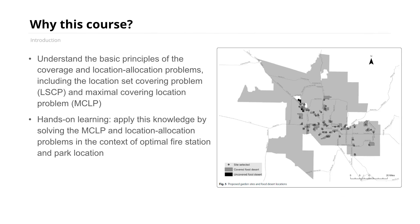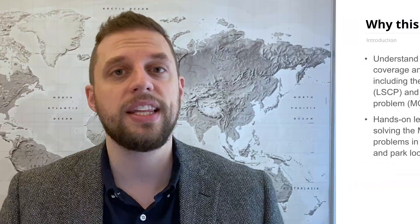By the end of this course, you'll understand how to solve both the coverage and location allocation optimization problems and be able to solve the maximum covering location problem and location allocation problems — using the example of fire station location in the first context, and park location and allocation of demand to parks in the second context. I'm really excited, so let's get started. We'll see you next time in the next video.